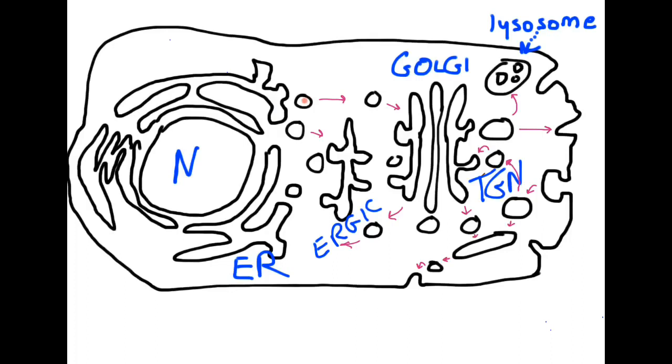And then the next time you looked, it would be in a trafficking vesicle budding off from the ER. And then the next time you looked, it would be in this trafficking vesicle. And then it would be in the lumen of the Golgi and so on through the maturation process that involves the Golgi apparatus and so on to the trans-Golgi network.